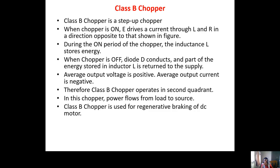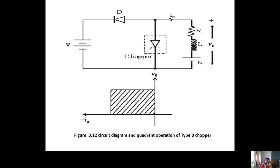Class B chopper is a step-up chopper. When the chopper is on, the EMF source E drives a current through L and R in a direction opposite to that shown in the figure, and the inductance stores energy. When the chopper is off, the diode conducts and part of the energy stored in inductor L is returned to the supply. The average output voltage is positive and average output current is negative, making it a second quadrant operation. Class B chopper is used for regenerative braking of DC motors.